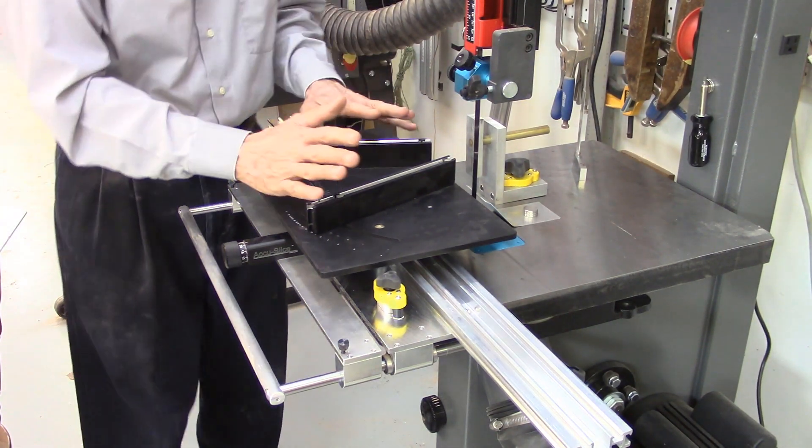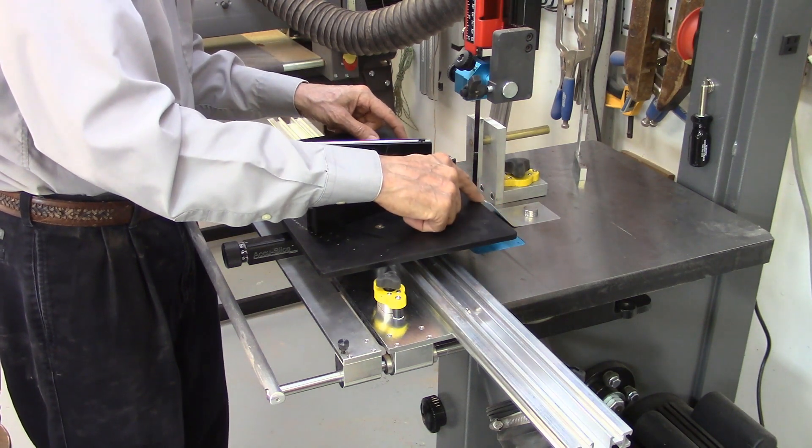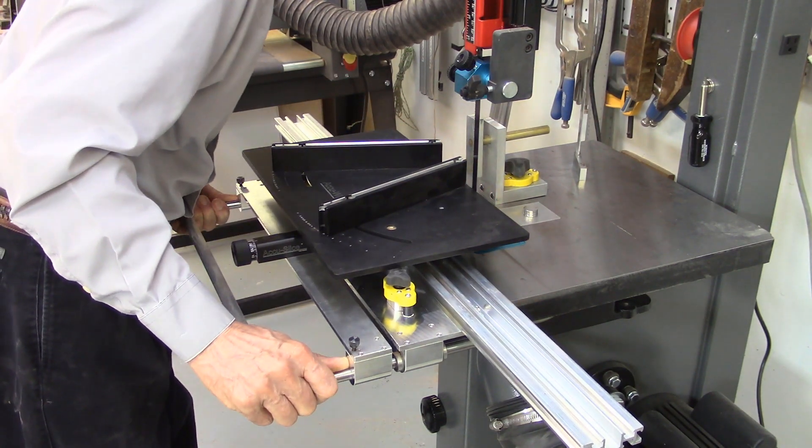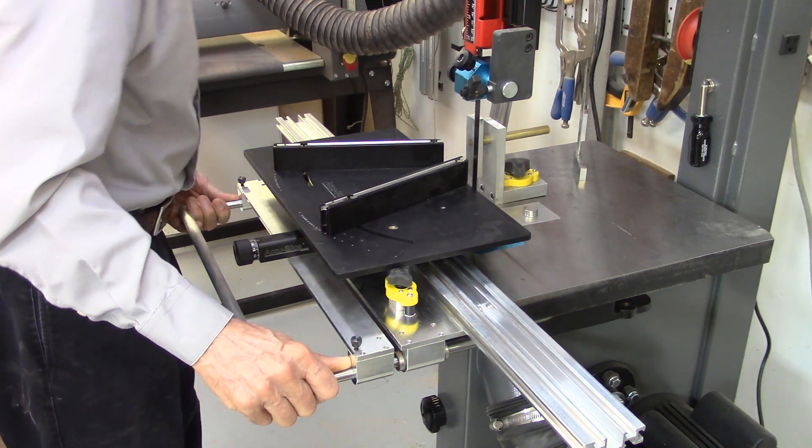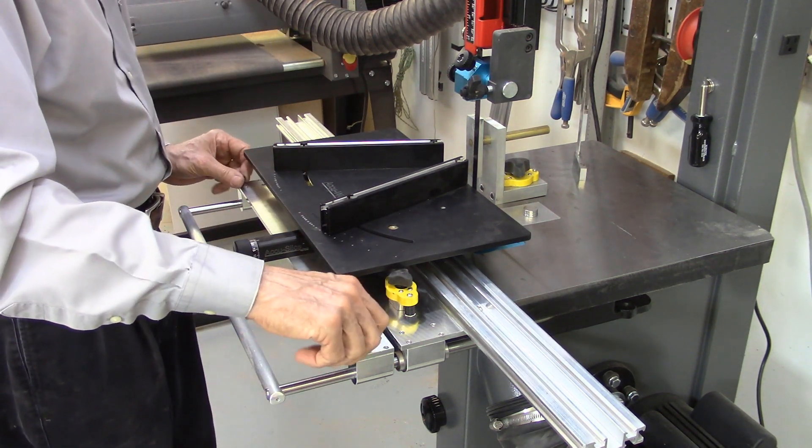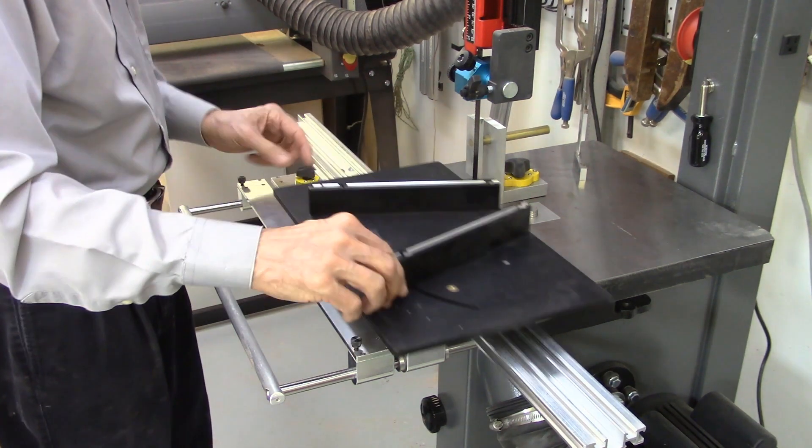Next, you move the AccuSlice table in, such that this edge of the AccuEdge table is close but not quite touching the bandsaw blade, usually about a sixteenth of an inch to an eighth of an inch away from the bandsaw blade. And then lock the table in position, first of all with the coarse adjustment knobs, and then with the mag jig clamps.